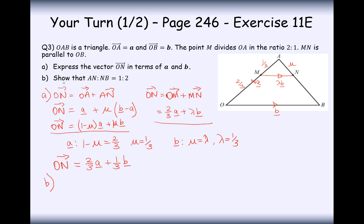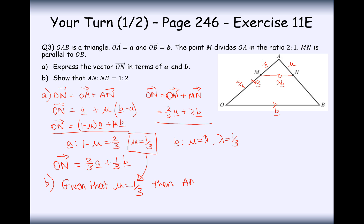So the vector from O to N equals two-thirds a plus one-third b. For part B, we need to show that the ratio AN to NB equals 1 to 2. Given that mu equals one-third, the point N is one-third of the way from A to B, meaning AN to NB equals one part to two parts.